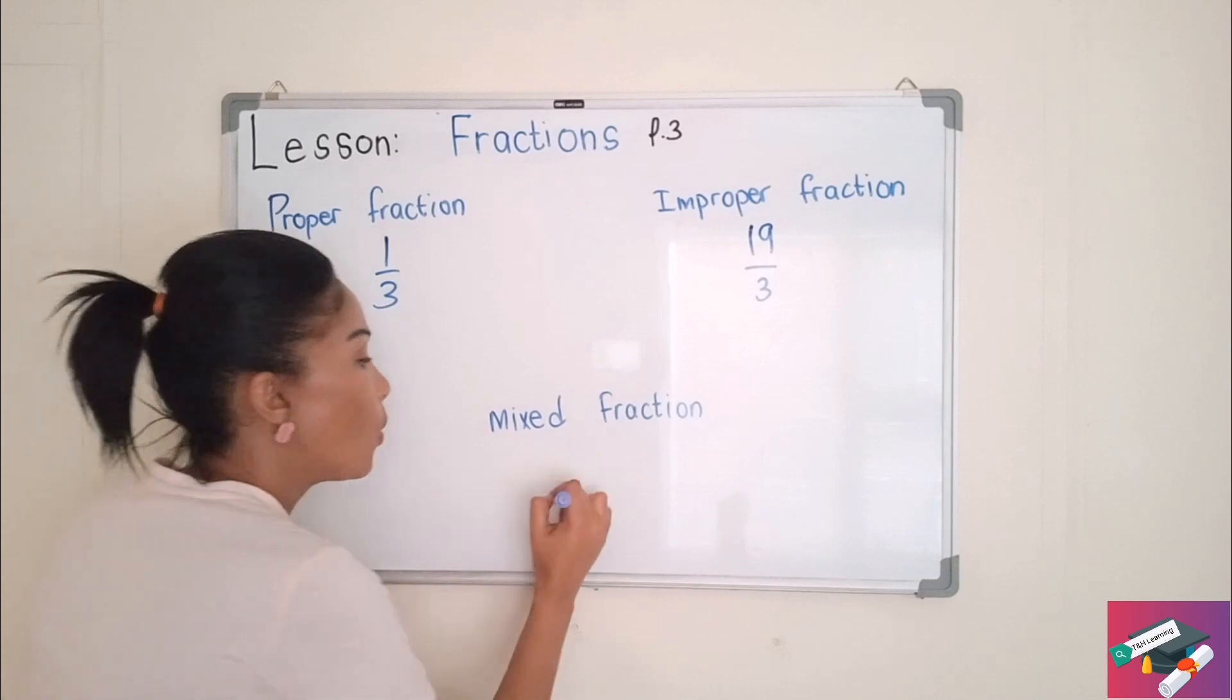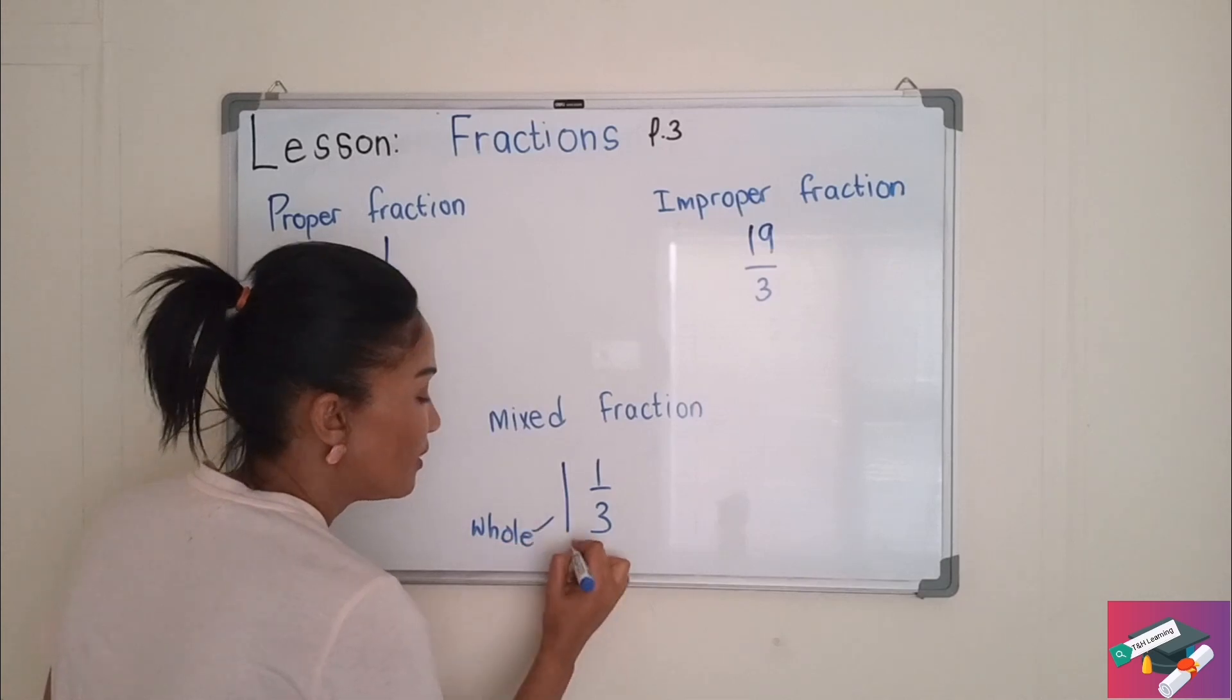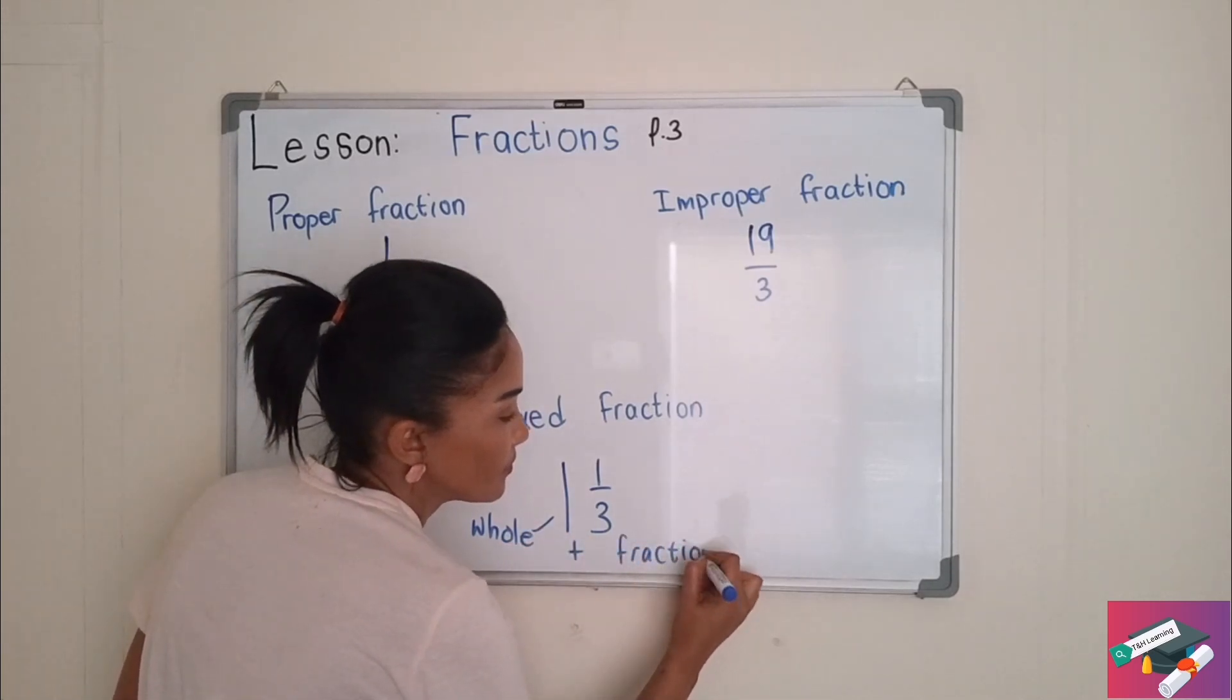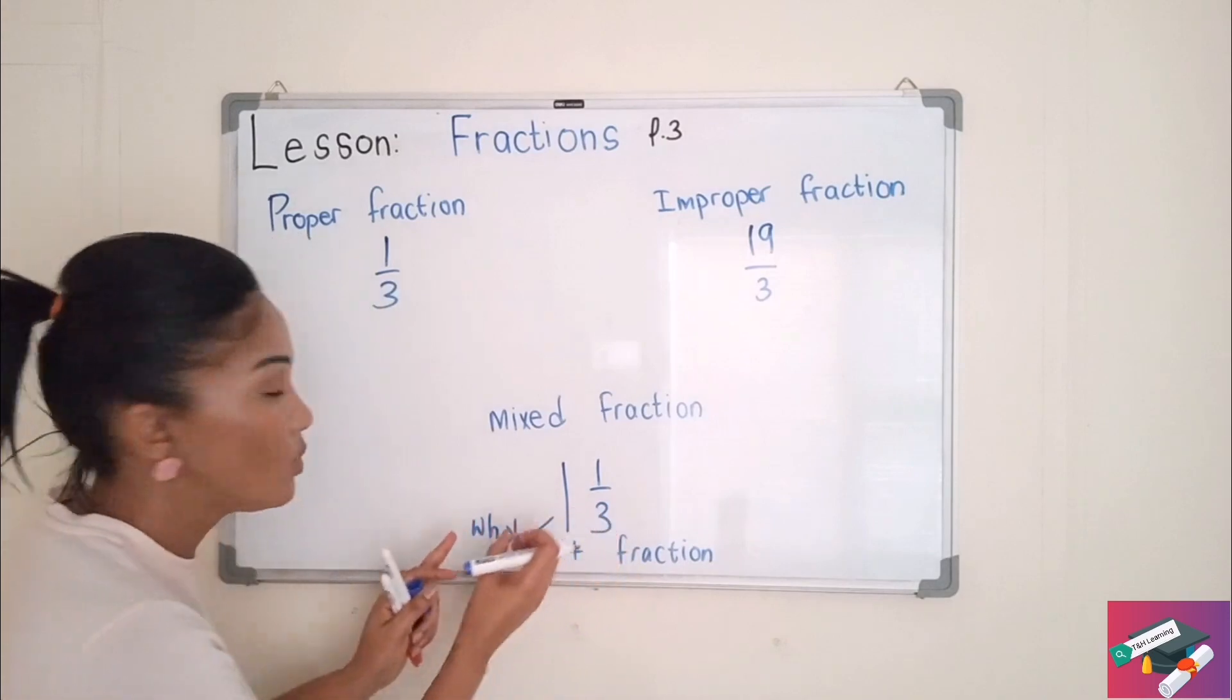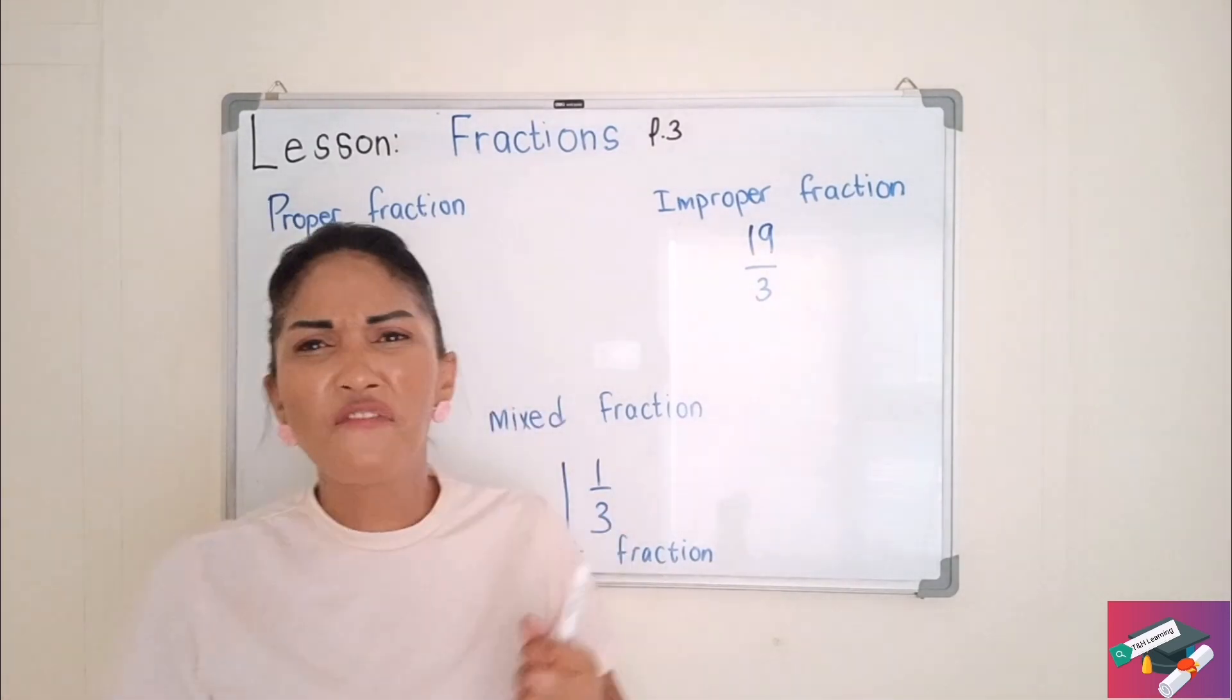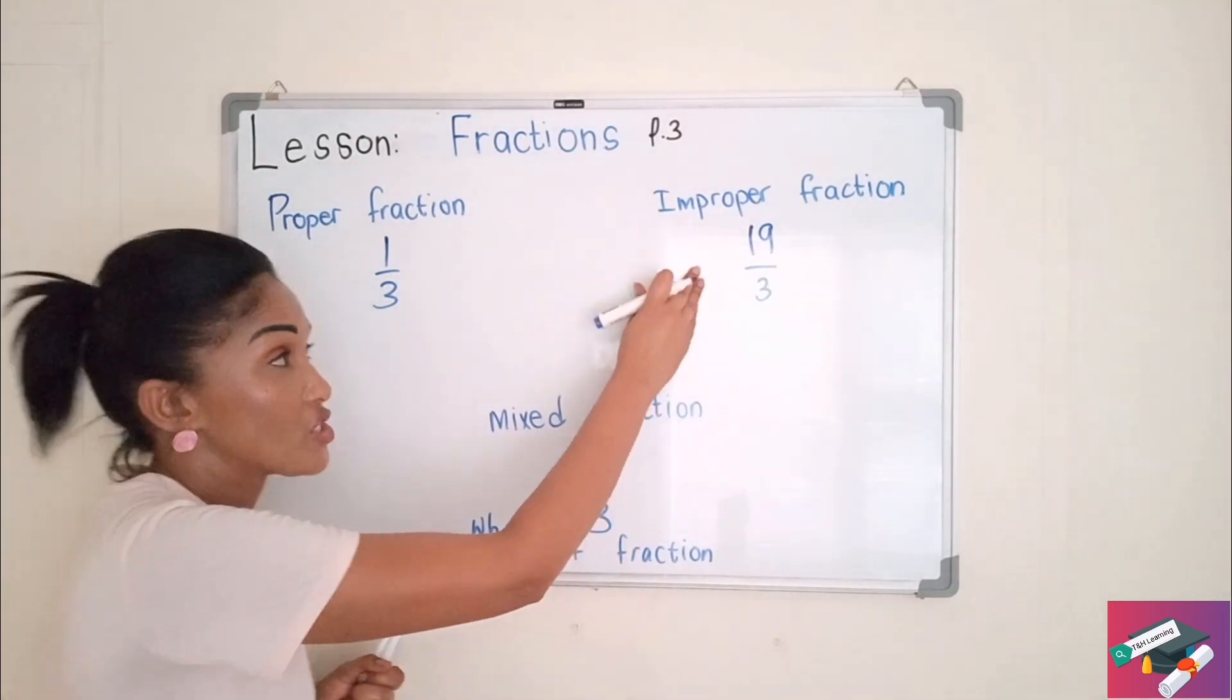A mixed fraction is when we have a whole plus a fraction. So we can have a proper fraction and we can have a whole. So how do I find out what is a mixed fraction or where do I get a mixed fraction from? I usually get it from an improper fraction.